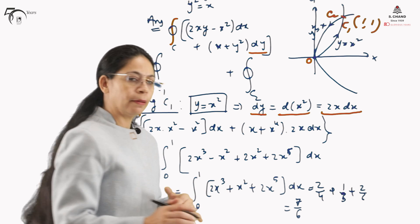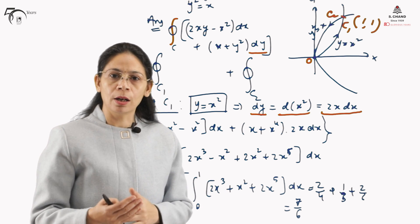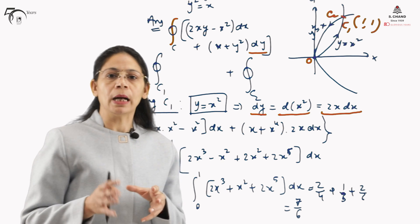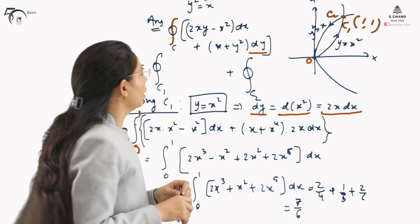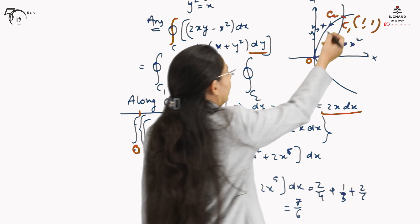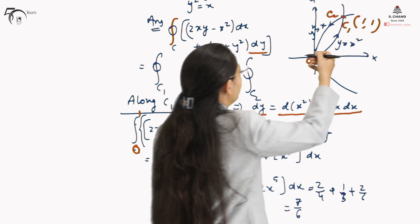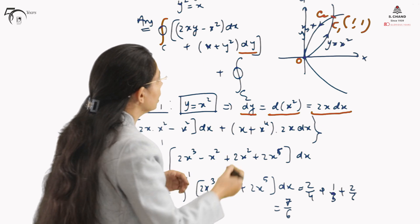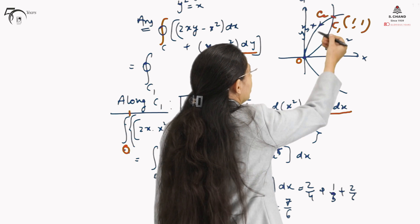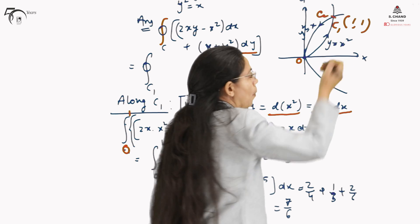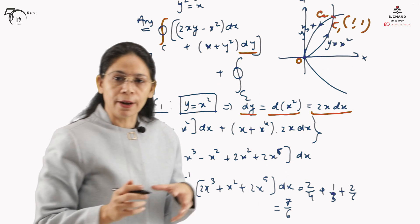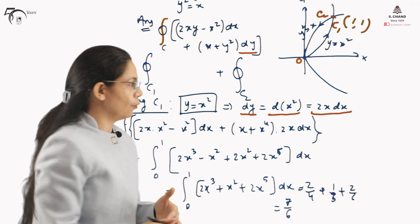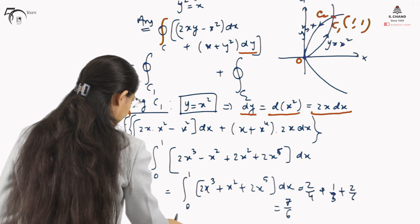Now we need to calculate the integral along path c2. There will be a problem here: the direction is very important, so we will be very careful while taking this direction into account.